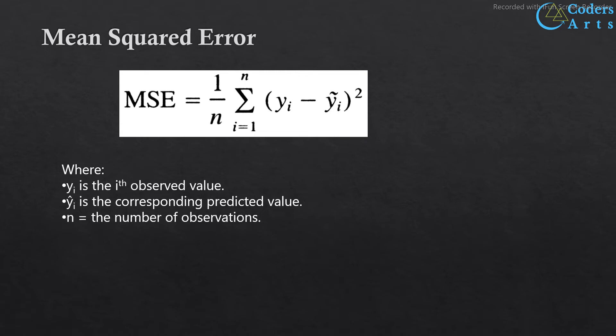Mean squared error is the most used and very simple metric — it is a little bit of a change from mean absolute error. Mean squared error finds the squared difference between the actual and predicted value. Calculating it is similar to calculating the variance. This is the formula of mean squared error.